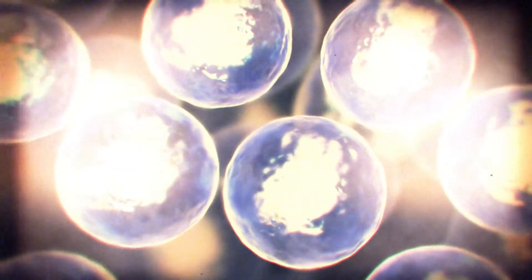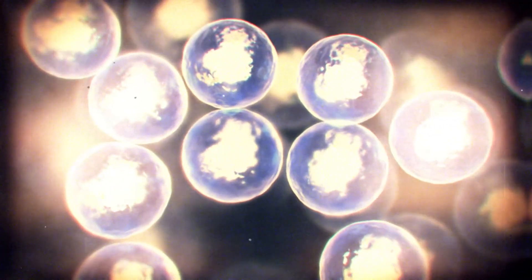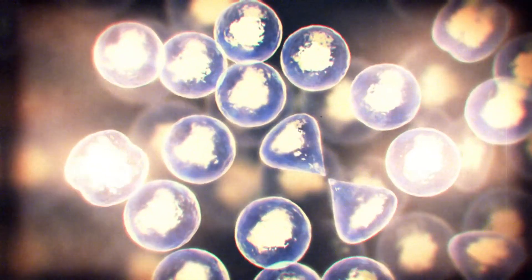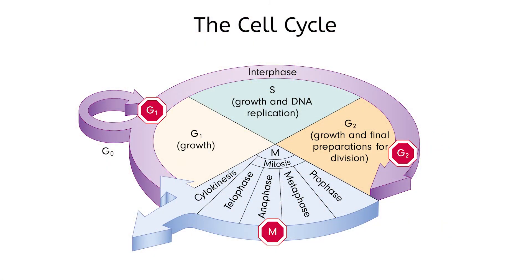None of these processes could be carried out if not for our cells. But cells don't last forever. To make sure that our body always has healthy, functioning cells, they go through a cycle of division and replication. This allows us to make cells to replace old, dying ones, and to increase our total number of cells when we are growing. Like everything else in our body, this cycle has to exist in a delicate balance and is controlled by some of the same types of molecules that you've already learned about.